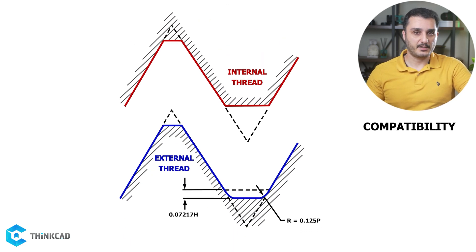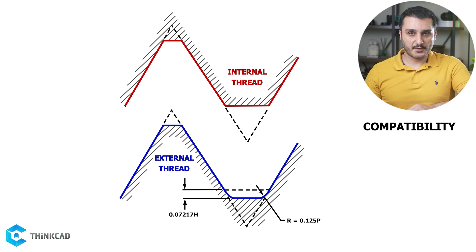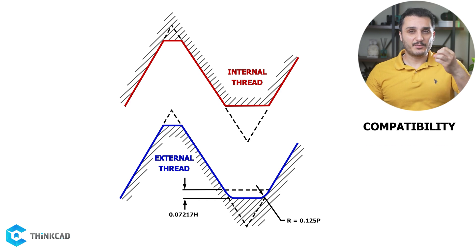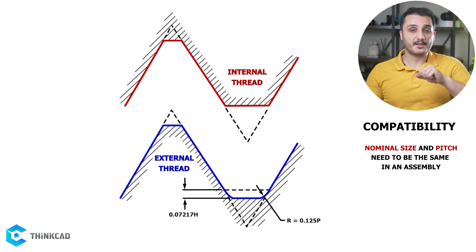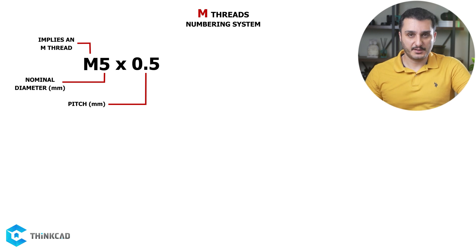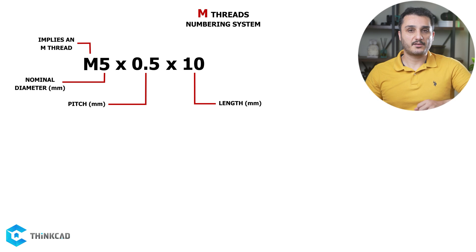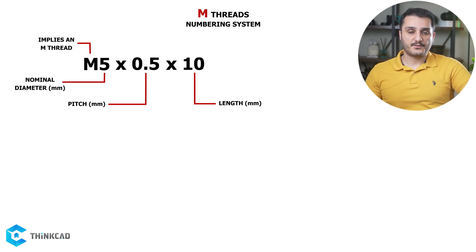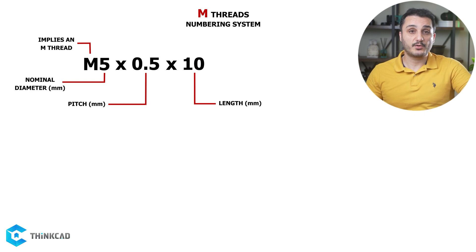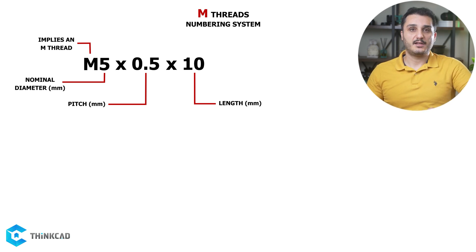Let me talk about compatibility. If you want to pick an external and internal thread to work with each other, such as a nut and bolt assembly, you need to make sure you use the same nominal size with the same pitch, otherwise they are incompatible and cannot be assembled. The next number in the callout is optional — it is the length of the threaded section, used for external threads such as bolts and screws. This value is in mm and requires a cross beforehand, just like the pitch length. For example, M5×0.5×10 tells us our 5 mm diameter bolt has a pitch of 0.5 mm and a threaded length of 10 mm below the fastener's head.